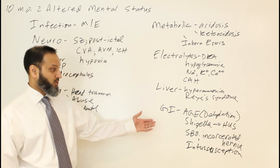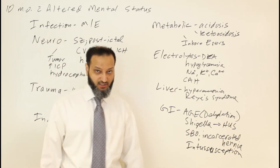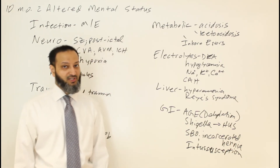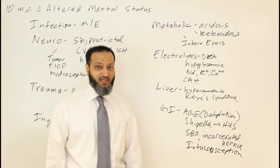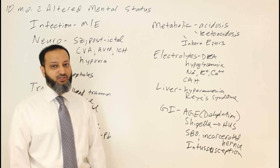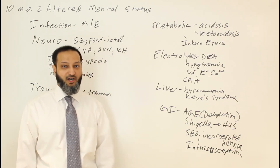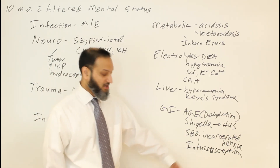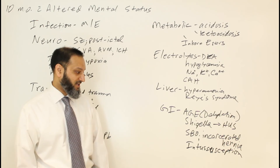Intussusception was now highly considered given his vomiting, altered mental status, recent viral URI symptoms over the last couple of days — putting him at risk for intussusception through Peyer's patch hyperplasia from the viral process. An abdominal ultrasound was performed and confirmed an intussusception in the right upper quadrant. He was sent for a barium enema, which was able to reduce the intussusception. The final diagnosis was intussusception causing his altered mental status and vomiting.